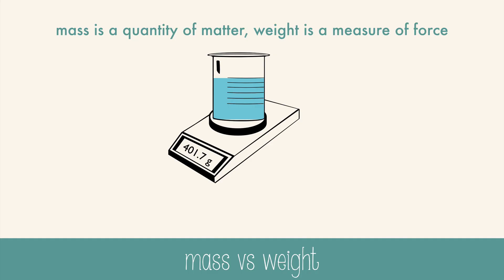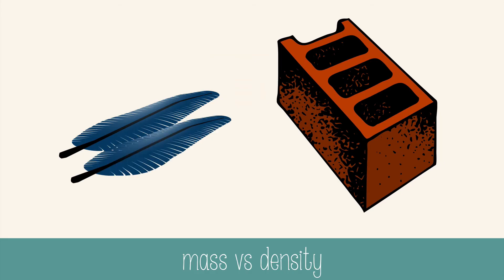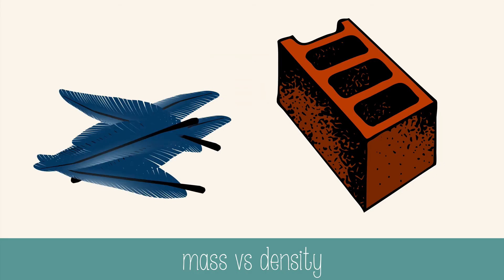People often confuse weight and mass, and they also confuse mass and density. For example: what weighs more, a pound of feathers or a pound of bricks? They actually have the same mass and the same weight on Earth. If it's a pound of each, the mass is the same — one pound. What you might have actually been thinking about was density. There would have to be a lot more feathers than bricks to equal one pound. If you thought brick was the right answer, you were probably thinking of density, not mass.